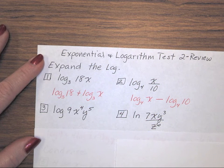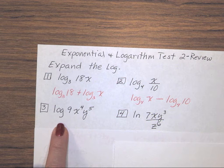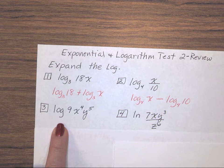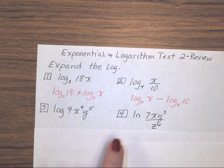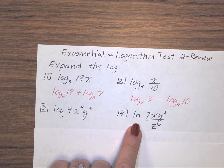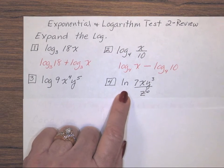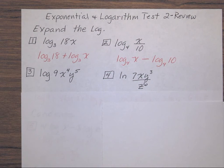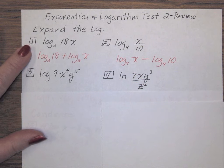For number 3, you have log of 9x to the 4th, y to the 5th, and number 4 is the natural log of 7x, y cubed, over z to the 6th. Again, pause your video, try it on your own, and then check your answers.